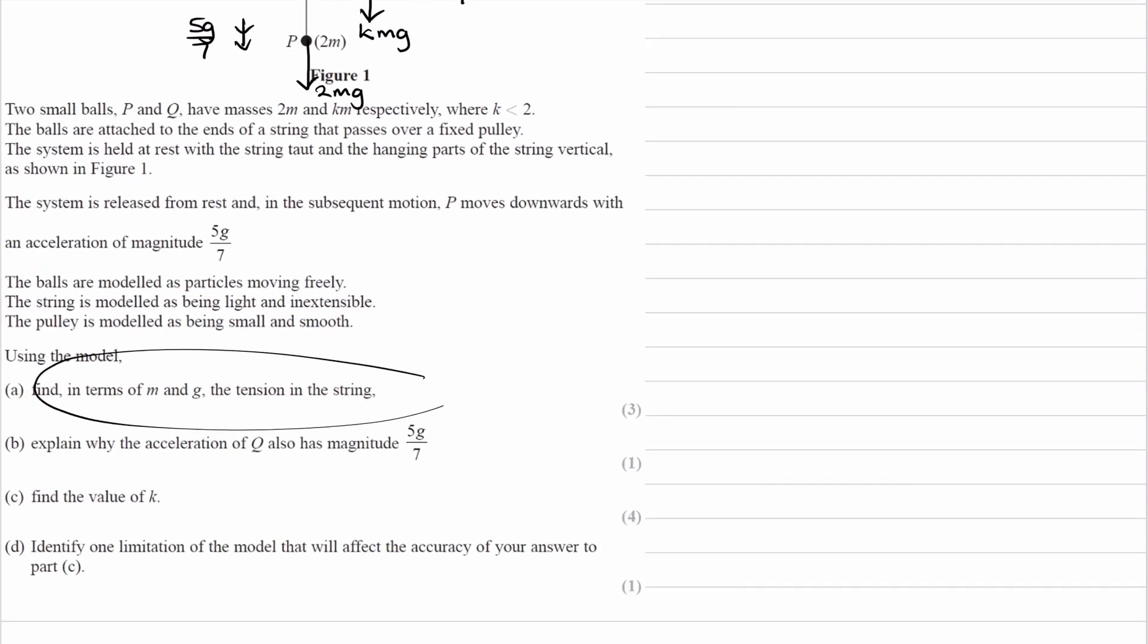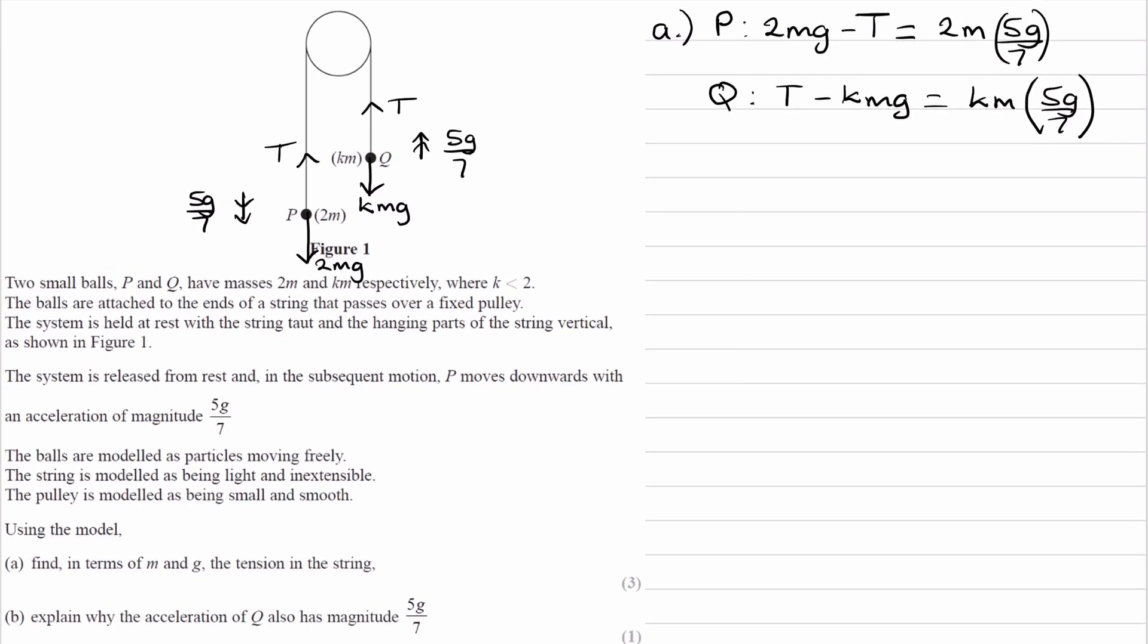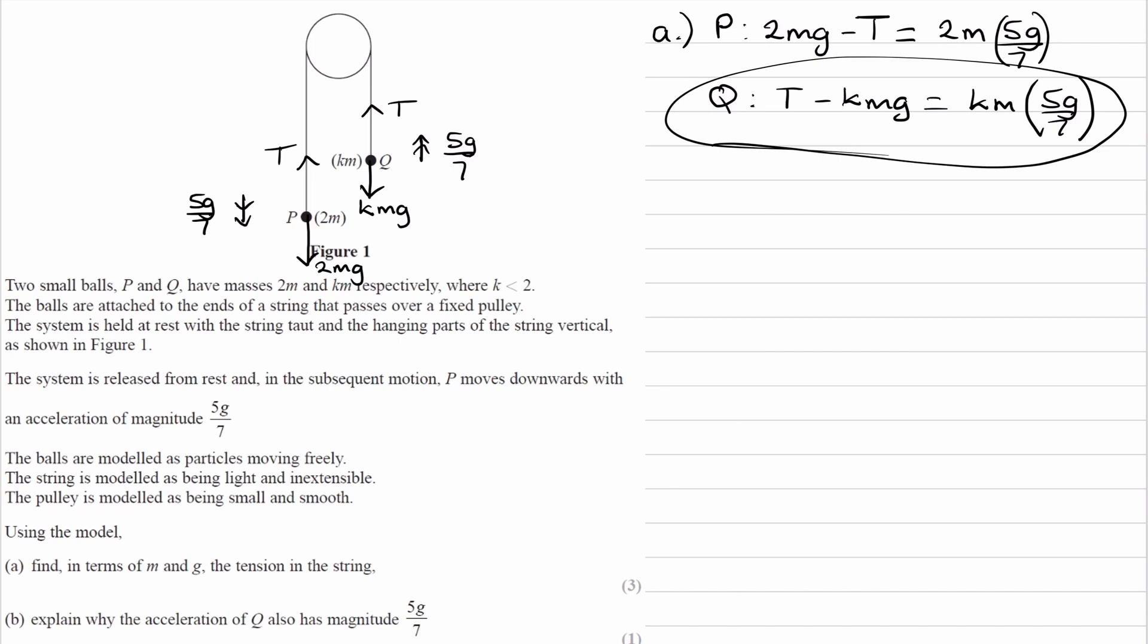And we're trying to find the tension in the string in terms of m and g. So let's look at the equations that we have. We might have to solve simultaneously. So if we look at the second equation, this one has an unknown in it, or an extra unknown in it, which is k. So if we actually just use the first equation, this one, it says in our question we want to get the tension in terms of m and g. So if we rearrange that first equation, the one for P, rearrange it for t, we end up with t is equal to 2mg minus, so 2 times 5 is 10, so it would be 10mg over 7. And if we did 2 minus 10 over 7, that gives us 4 over 7. So we end up with t being 4 over 7mg.